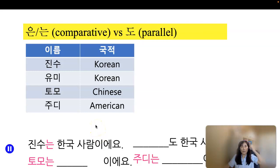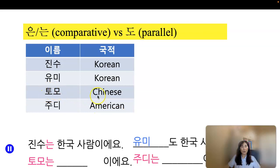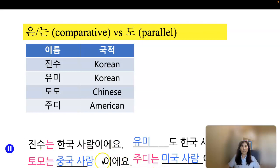Let's compare these four persons in terms of their nationality. 진수는 한국 사람이에요. Try to find someone who is also 한국 사람 — 유미도 한국 사람이에요. How about Tomo? Tomo는 중국 사람이에요. How about Judy? 주디는 미국 사람이에요. So they are different, and the two added particles reflect those differences: 토모는 중국 사람이에요.